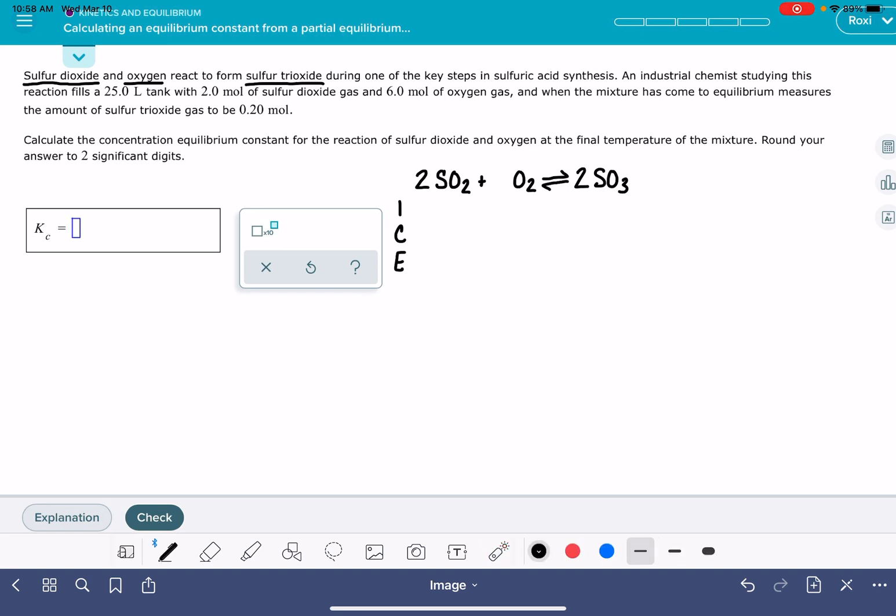Again, we're going to have to calculate the molarities just like other Alex problems. We have two moles of sulfur dioxide in a 25 liter tank. So that molarity is going to be two moles divided by the 25 liters. Two divided by 25 is 0.08. That's the molarity, initial molarity of our SO2.